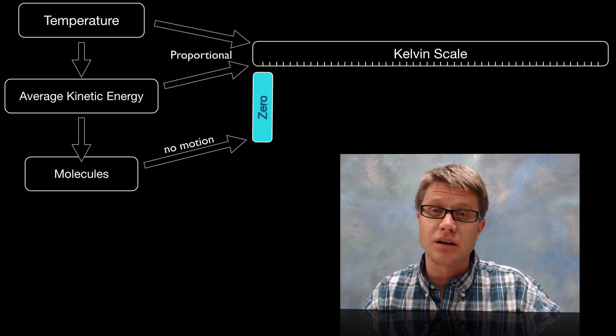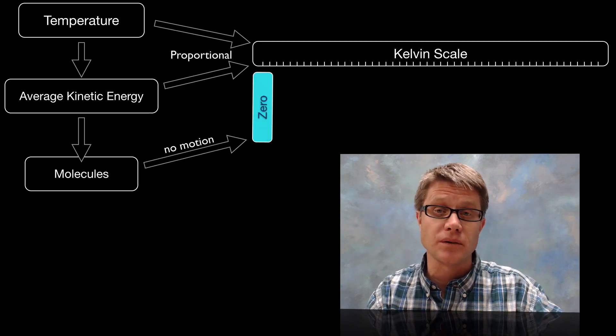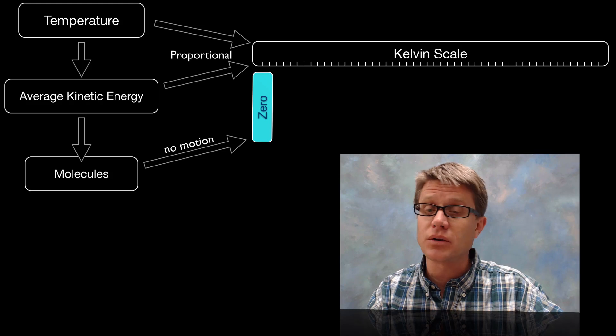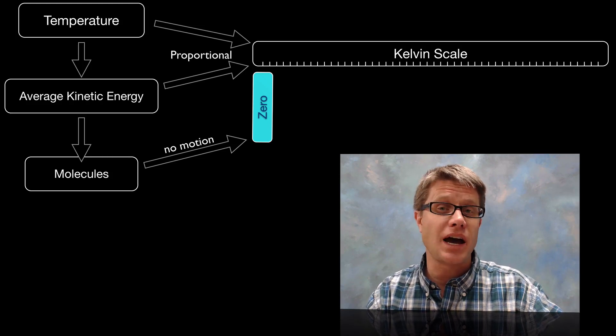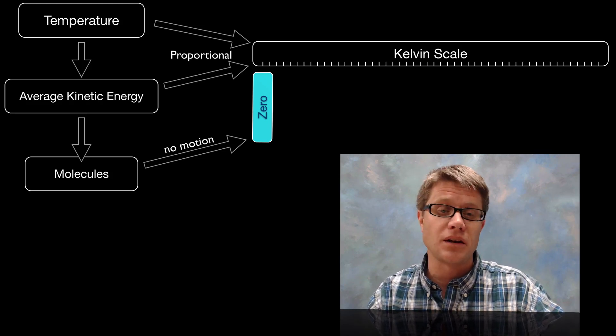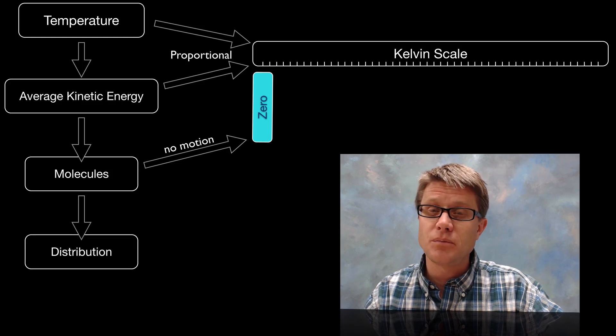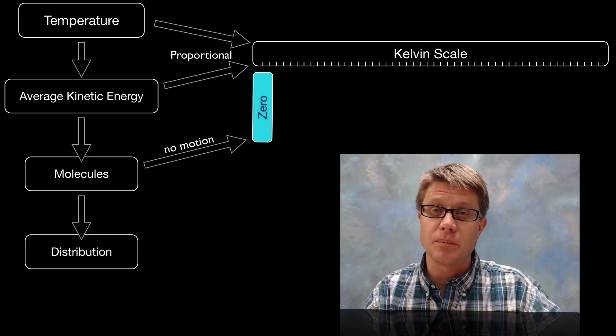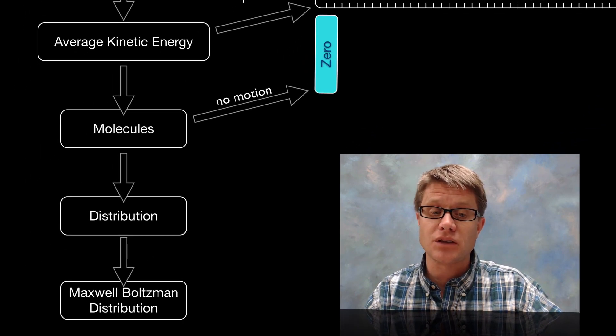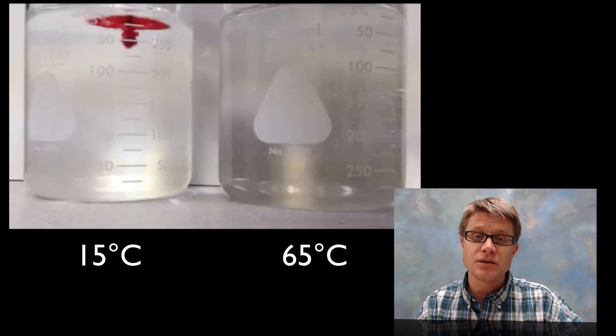And so in the Kelvin scale if there's no molecular motion then there's no temperature. There's no Kelvin. And so zero Kelvin is going to be absolute zero. No molecular motion. And so the distribution of those molecules at different temperatures can be described using the Maxwell Boltzmann distribution. And so let's get to that.